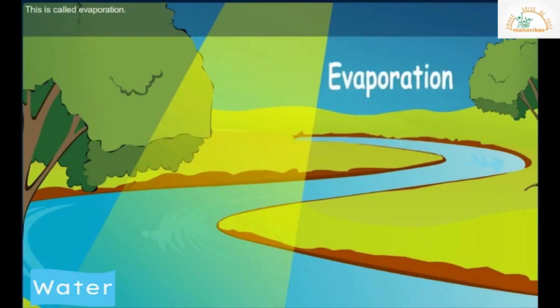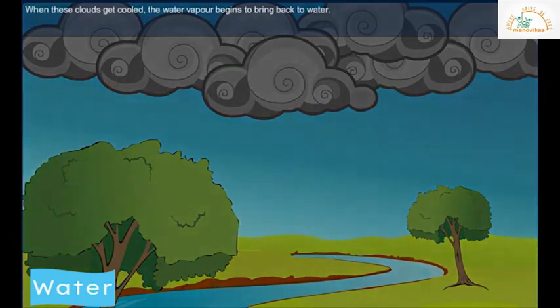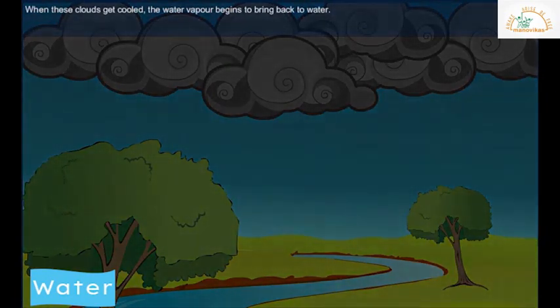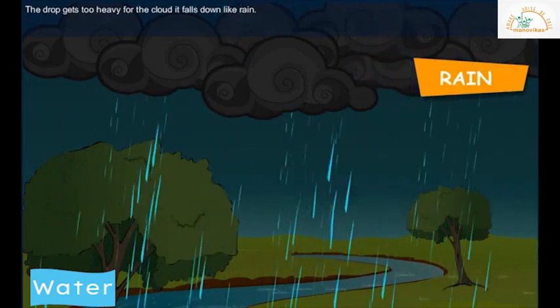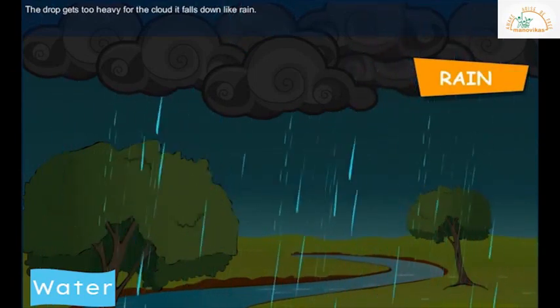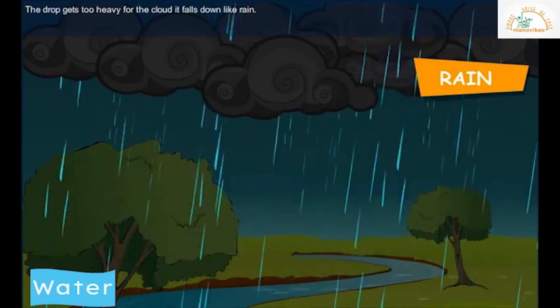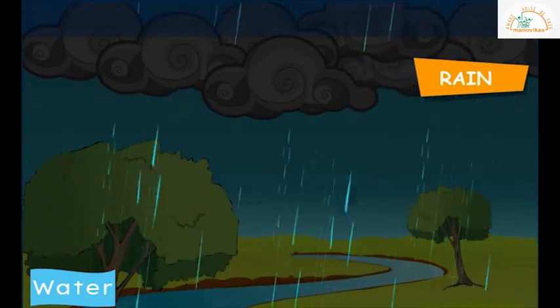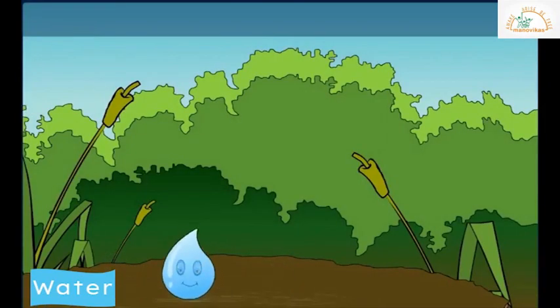Water evaporates all the time. This water vapor begins to rise into the air and it slowly begins to form clouds. When these clouds get cooled, the water vapor begins to change back to water. Since the drops get too heavy for the cloud, they fall down like rain. All of us love the rain, right? What happens after the drops fall down? Some of the drops form puddles.